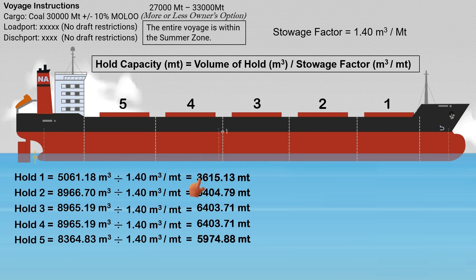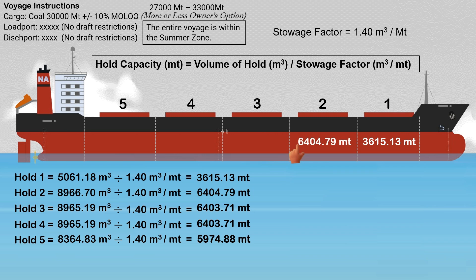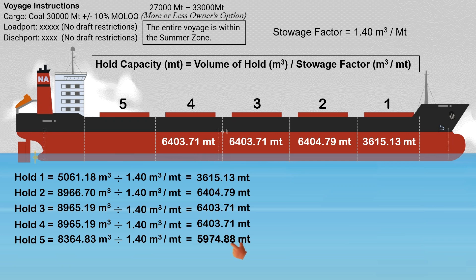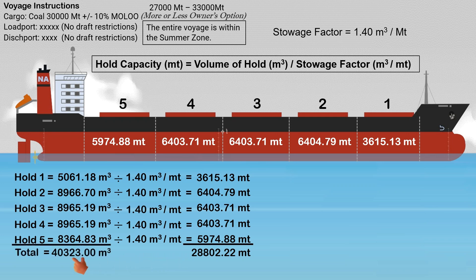For cargo hold number 1, the full capacity is 3,615.13 metric tons. Cargo hold number 2 can load 6,404.79 metric tons. Hold numbers 3 and 4 have the same capacity of 6,403.71 metric tons each. And hold number 5 has a capacity of 5,974.88 metric tons. The maximum coal cargo that can be loaded to all cargo holds based on the given stowage factor is 28,802.22 metric tons, and the total volume of all cargo holds is 40,323.09 cubic meters.